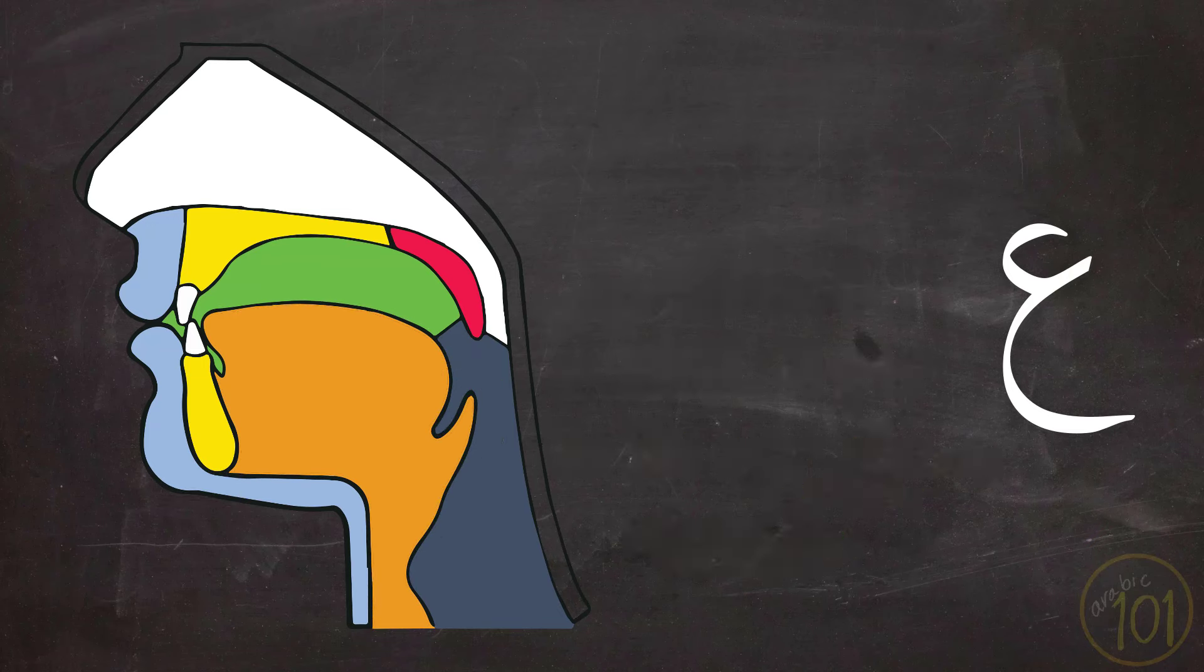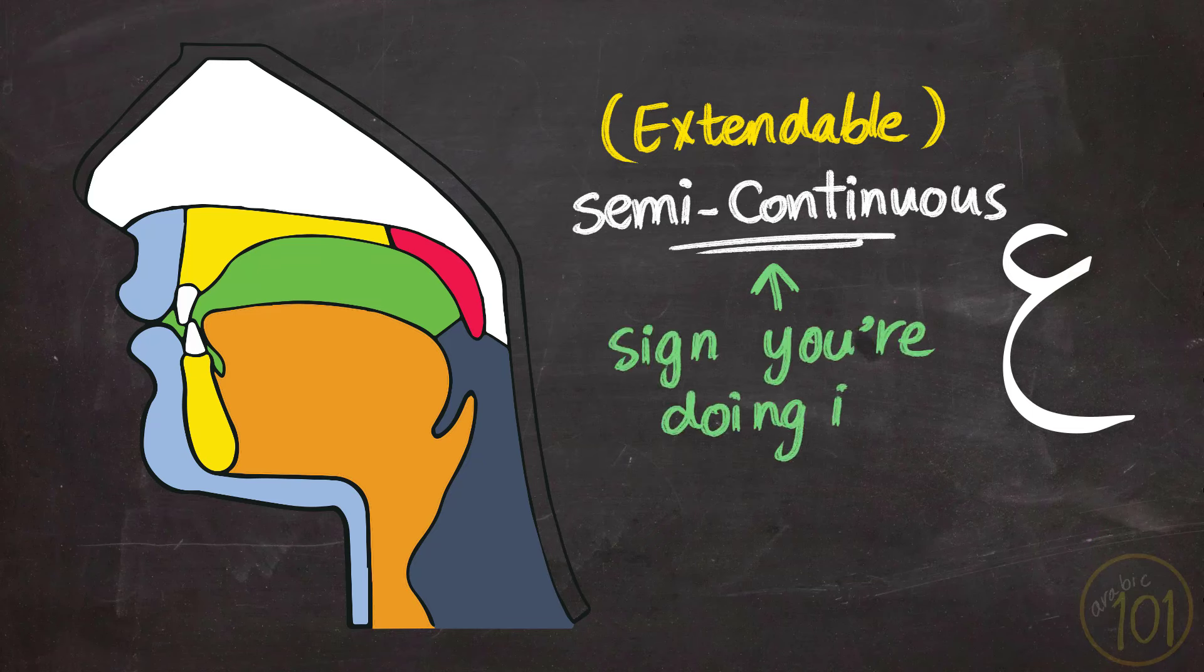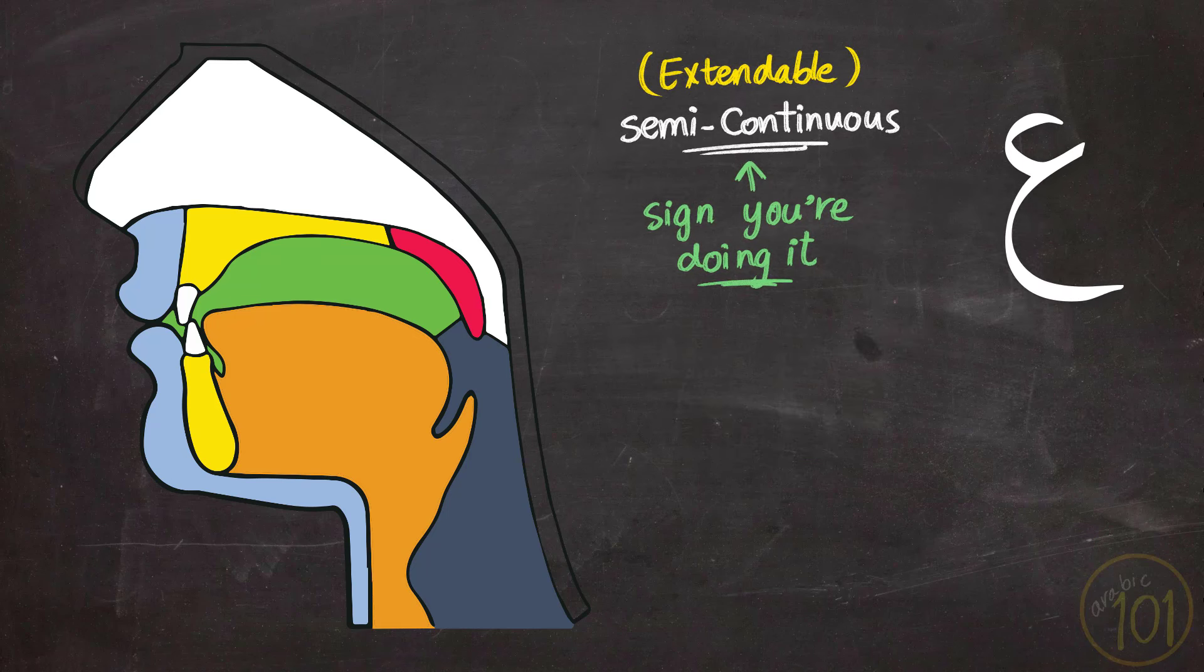The sound of Ayn is a semi-continuous sound, which means that it can be extended or made longer. And while that is not the point when reciting the Quran, it is an indication that you're pronouncing the Ayn correctly.